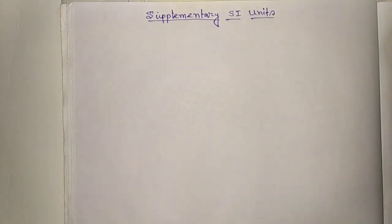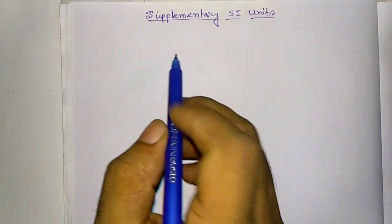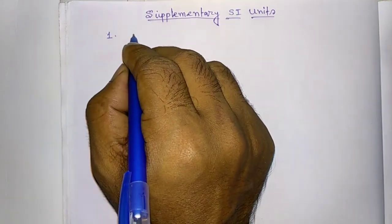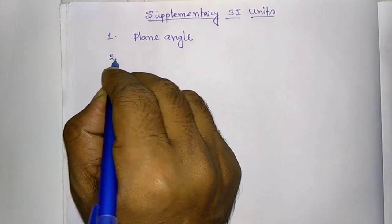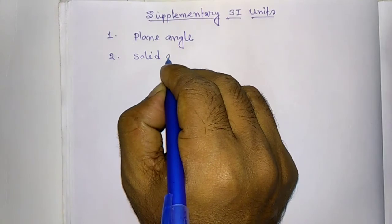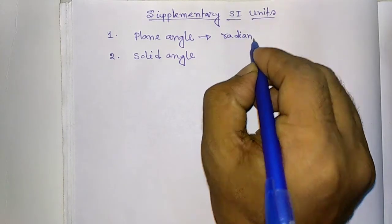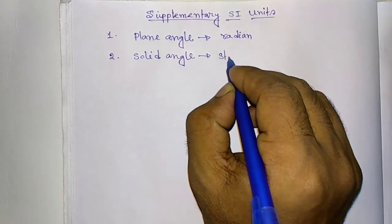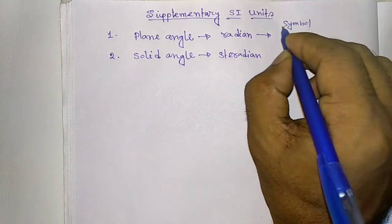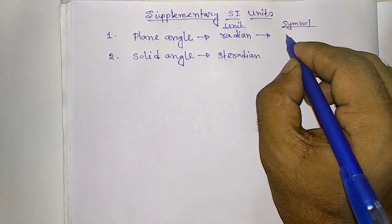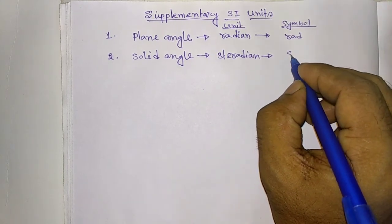In SI system, there are seven basic quantities and two supplementary quantities. So, supplementary SI units are number one, plane angle. And number two is solid angle. Unit of plane angle is radian. Unit of solid angle is steradian. Its symbol is radian. And the symbol of steradian is R.